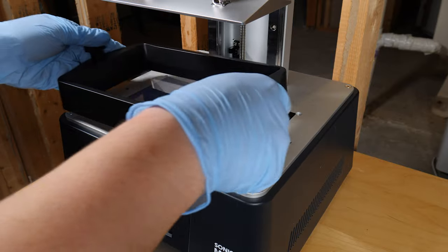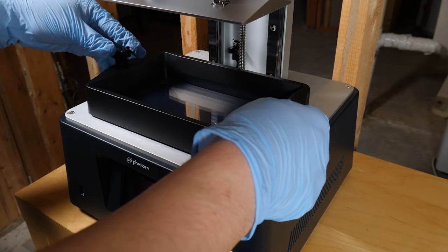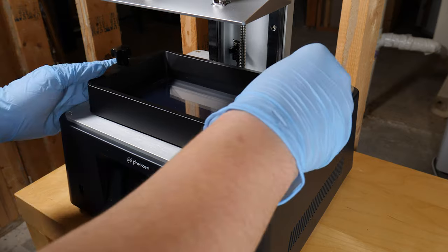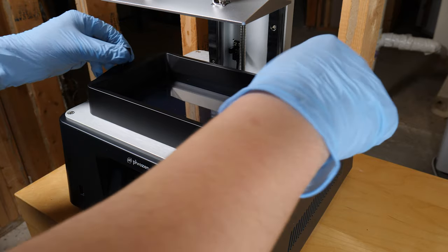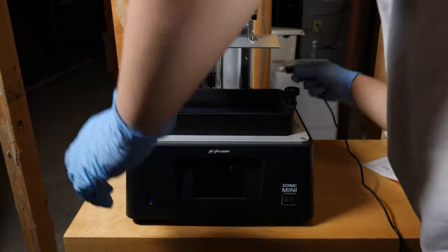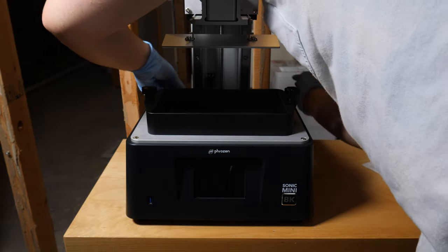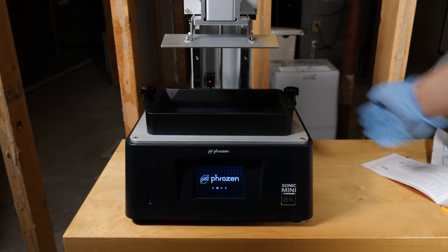Next I for some reason screwed in the resin vat when I should have left this off, as I needed to do the leveling and the other testing before this. Now all we got to do is plug in the power cord and power on the printer for the first time.